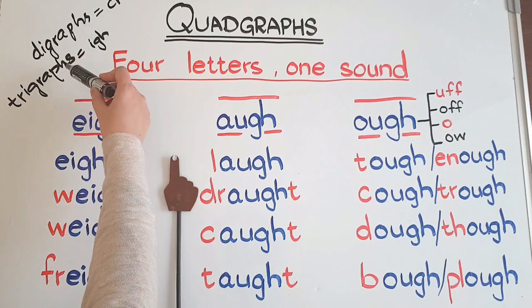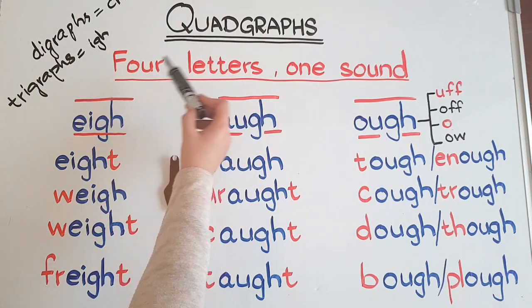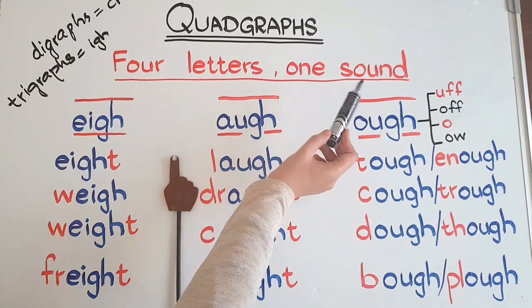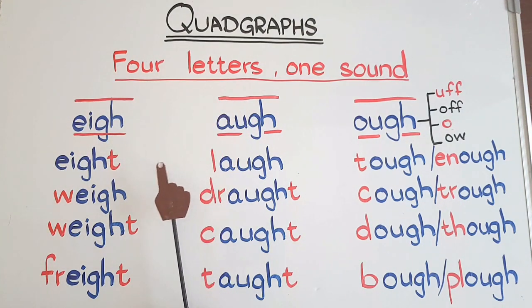So after digraphs and trigraphs, we have quadgraphs. Quadgraphs mean four letters that make one sound different from the letters' own sounds. But before moving on, if you haven't subscribed to my channel, please subscribe, hit the like button, and turn on the bell notification. Let's get started!